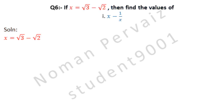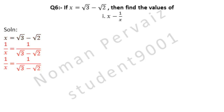As we are given with the value of x, which is under root 3 minus under root 2, we write the value of x. Now look at part 1 — it contains the value of x and 1 over x. So first we need to find the value of 1 over x. 1 over x is equal to 1 divided by the value of x.